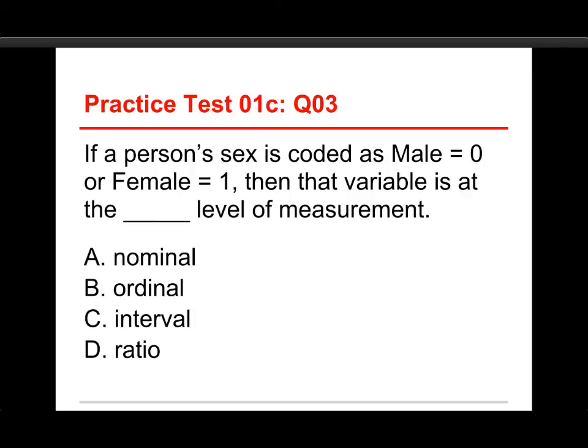Number three: if a person's sex is coded as Male equals zero or Female equals one, then that variable is at the blank level of measurement. The choices are Nominal, Ordinal, Interval, and Ratio. The answer is Nominal, because sex or gender is simply this or that — it's a categorical thing. You can assign numbers to it, like zero and one, because some computer programs like to have numbers for these. But that doesn't change the fact that the labels are arbitrary. It's still Male and Female — still Nominal, just indicating different groups with different names.